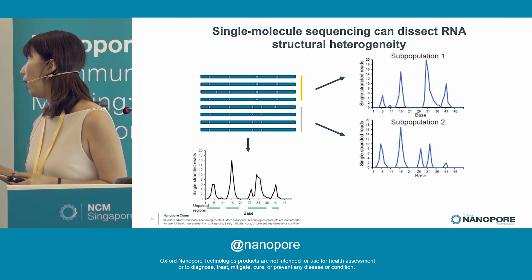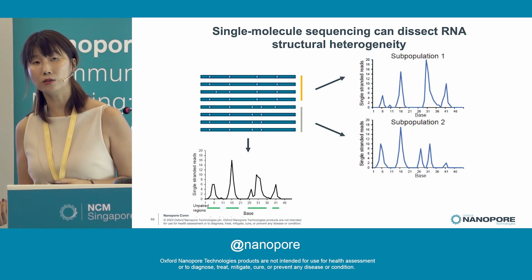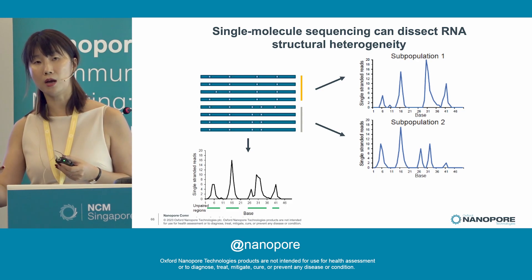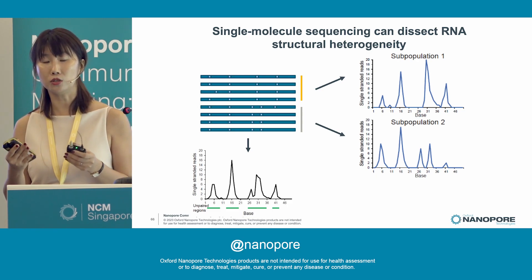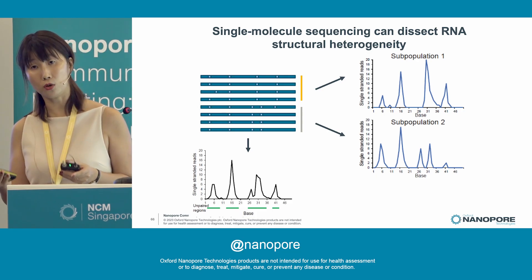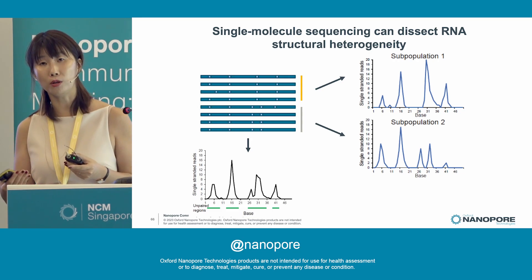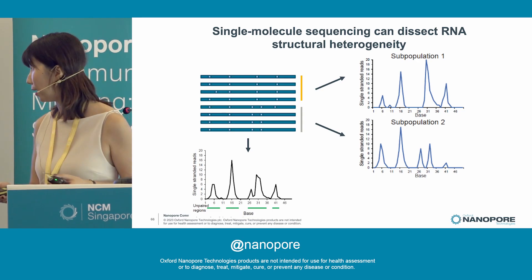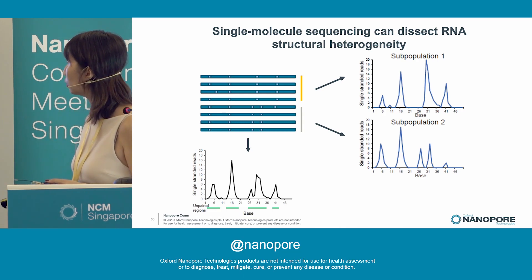In addition to our group, other groups such as Sylvie Ruskin's group and Danny Incanado's group have used short-read sequencing to separate RNA signals along single molecules. But one challenge is that with short-read sequencing, they are restricted to about under 300 bases of sequencing. The ability to separate RNA at the single-molecule level is a function of the density of RNA modifications and length, so we wanted to see whether nanopore sequencing is able to separate these molecules better.